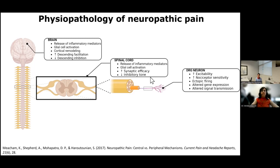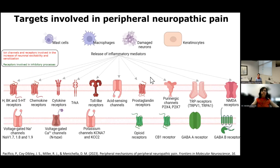There can also be changes in dorsal root ganglia neurons and in sensory neurons, where an increase in excitability and in nociceptor sensitivity is observed, ectopic firing, and alterations both in gene expression and in signal transmission. We focused our research on peripheral neuropathic pain, which is caused by damage in peripheral nerves that transmit painful signals from the limbs to the medulla.